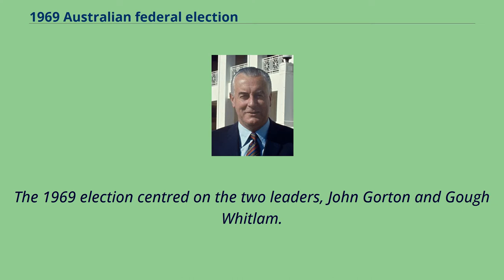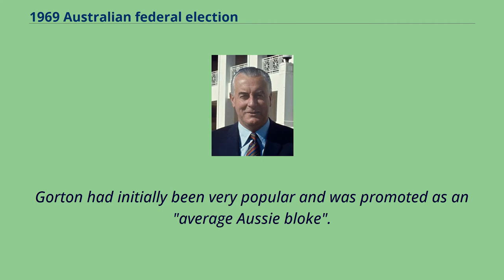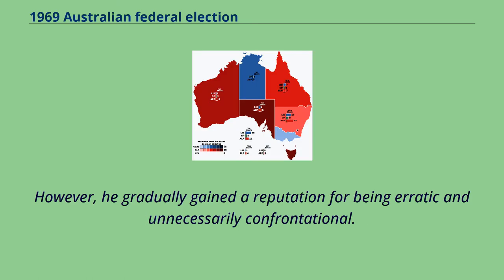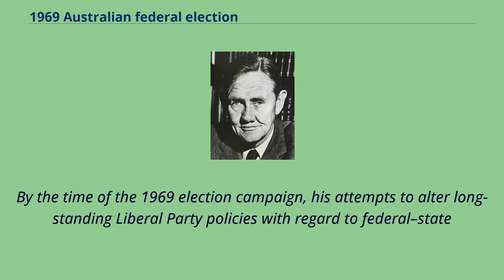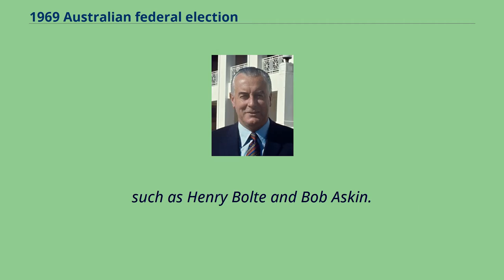The 1969 election centred on the two leaders, John Gordon and Gough Whitlam, both leading their respective parties in an election for the first time. Gordon had initially been very popular and was promoted as an average Aussie bloke, an image boosted by his record of wartime service and his craggy, battered appearance. However, he gradually gained a reputation for being erratic and unnecessarily confrontational. By the time of the campaign, his attempts to alter long-standing Liberal Party policies on federal-state powers and foreign affairs had alienated more conservative sections of the party and various state Liberal leaders, such as Henry Bolt and Bob Askin.